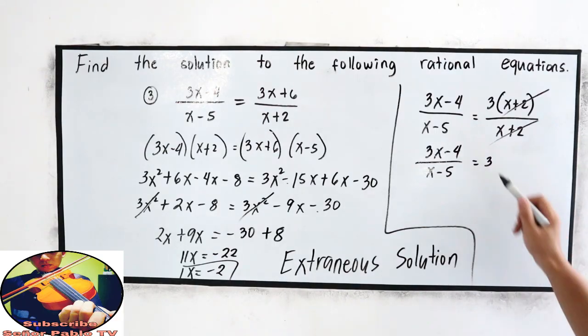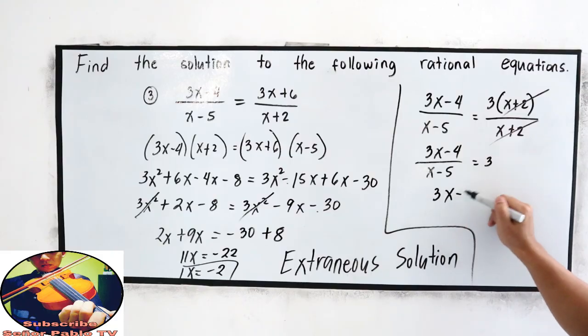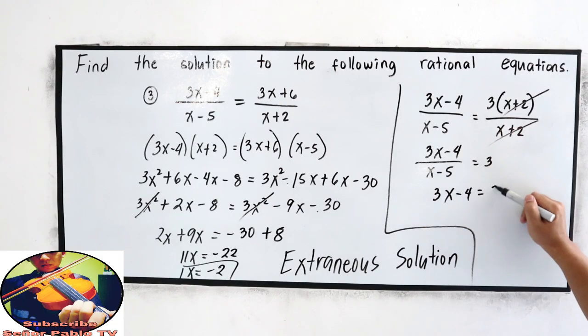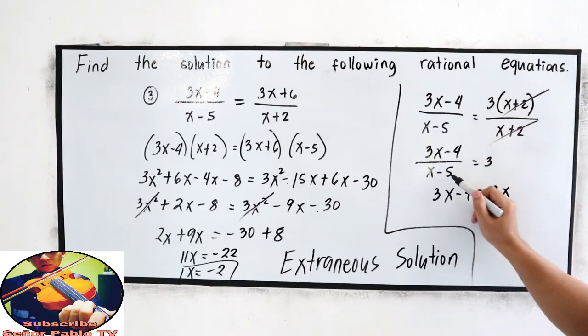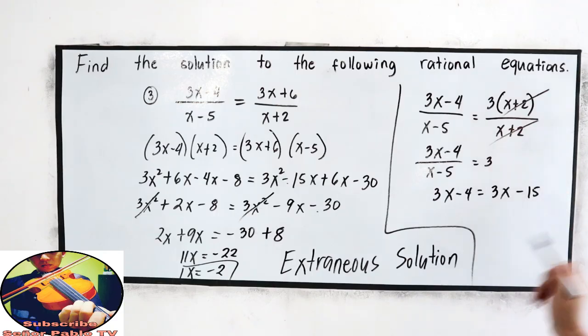Then cross multiply, so we have 3x minus 4 is equal to 3 times x minus 5. 3x negative 3 times, negative 5 times 3, negative 15.